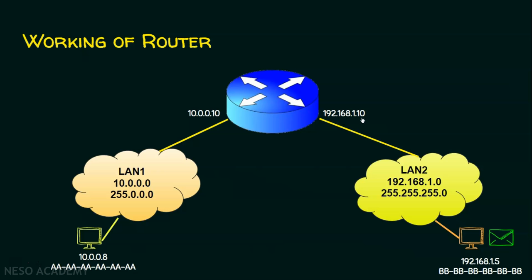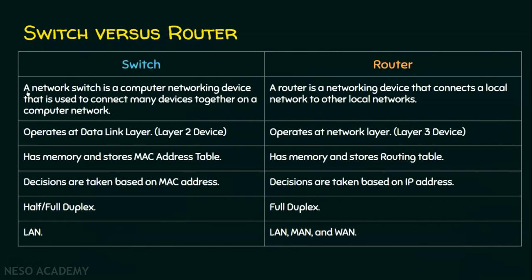Let's see the difference between router and switch. A switch connects many devices on a local area network, whereas a router connects a local area network to other local area networks. A switch operates at the data link layer — layer 2 — while a router operates at the network layer — layer 3. A switch stores the MAC address table; a router stores the routing table. Switch makes forwarding decisions based on MAC addresses; a router uses IP addresses. A switch can work in half duplex or full duplex mode, whereas a router works in full duplex mode. A switch is a LAN device, whereas a router can operate in LAN, metropolitan area network, and wide area network environments.